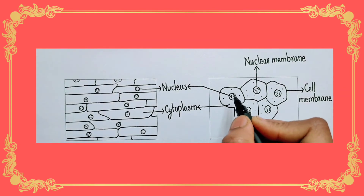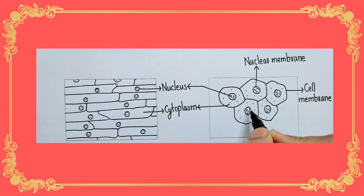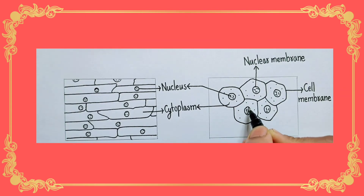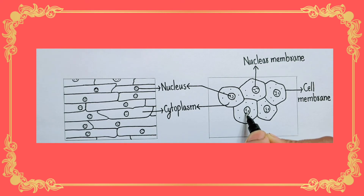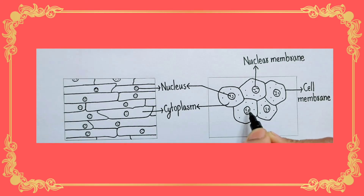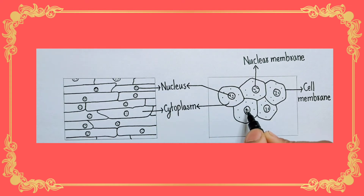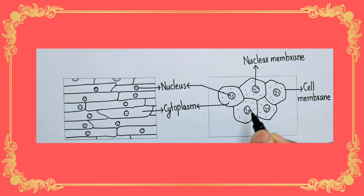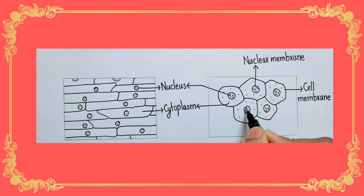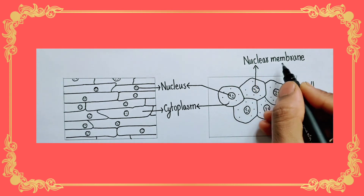Please note that this entire structure, including this outline and these tiny thread-like structures, is called the nucleus. These tiny thread-like structures are actually chromosomes, and this outline or membrane which surrounds this structure is the nuclear membrane.